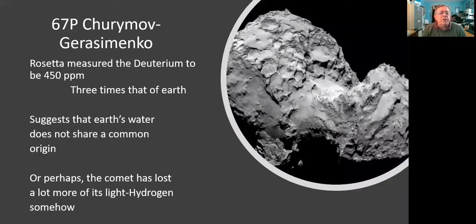Then the Rosetta mission had a look at 67P Churyumov-Gerasimenko. And it's 450 on that comet. That's three times as much as we have. So that doesn't really sound like a very good match at all.